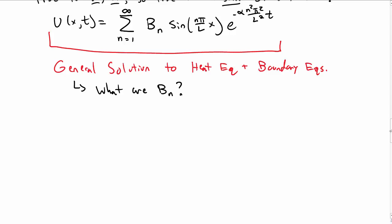In a previous video, we found the general solution to the heat equation and boundary conditions given here. And the main question we had is what are the B sub n's, the unknown constants.